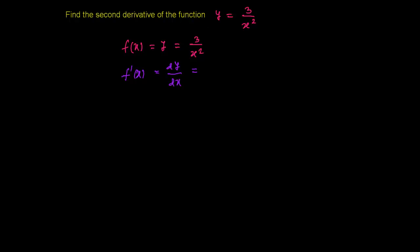Now how to find the derivative of this? You know 3 over x square, so you can write it like 3 times x to the power minus 2, because x square when it goes to the numerator it will be 3 times x to the power minus 2.